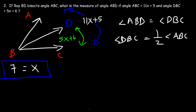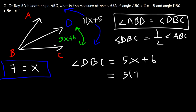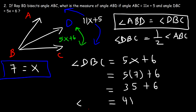Now that we have X, we can find angle DBC, which equals ABD. Angle DBC equals 5X plus 6, and replacing X with 7: 5 times 7 is 35, and 35 plus 6 is 41. So angle DBC is 41 degrees, which is congruent to angle ABD. The answer is 41 degrees.